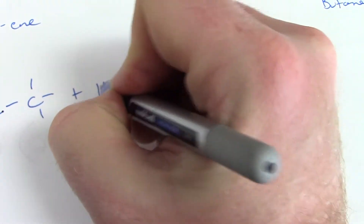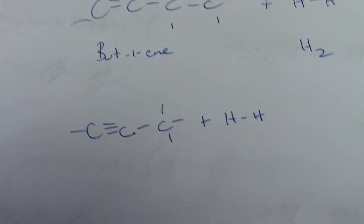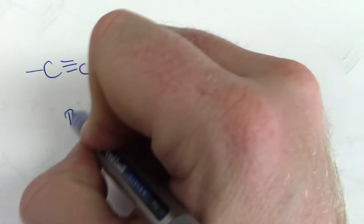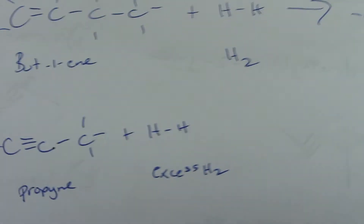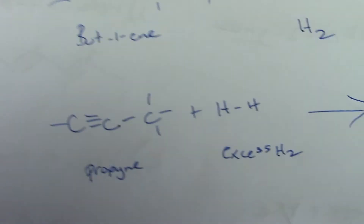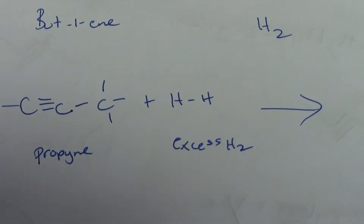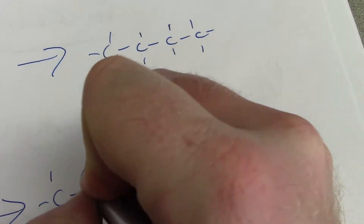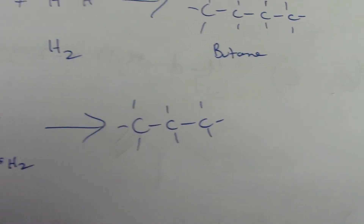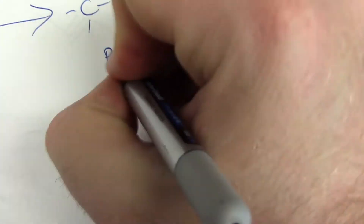Another example of hydrogenation: I can also take an alkyne. So propyne plus excess H2 — we're going to use enough H2 to break up all these bonds. When we say excess, we mean taking the alkyne or alkene to an alkane — you use as much hydrogen as necessary to break up all the double and triple bonds. Using excess hydrogen, I can turn propyne into propane. That's hydrogenation.